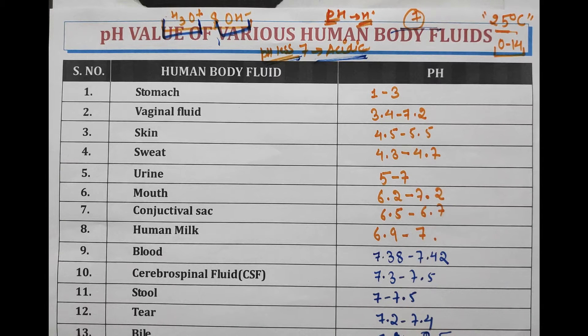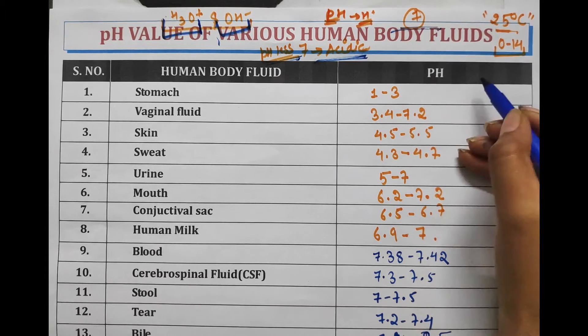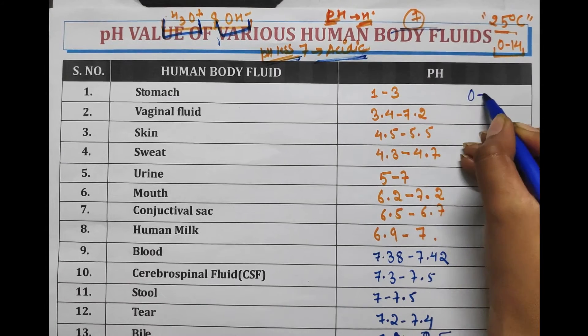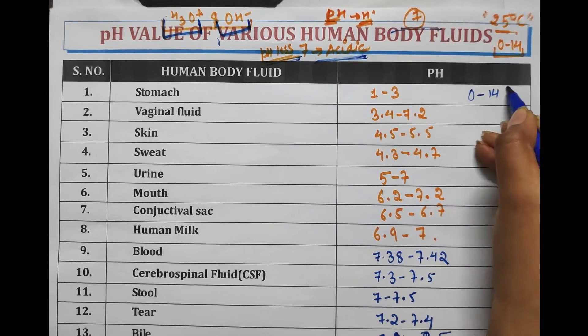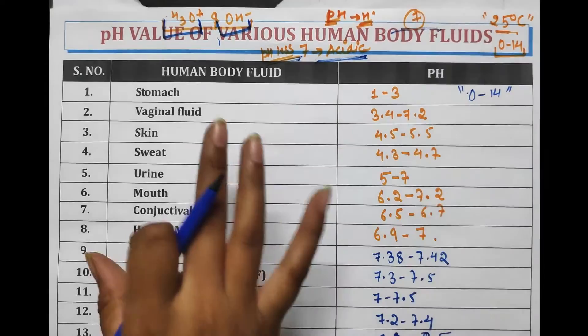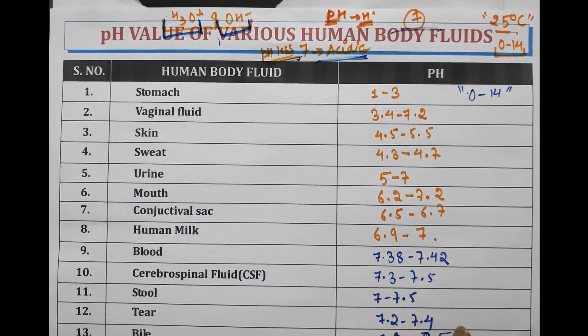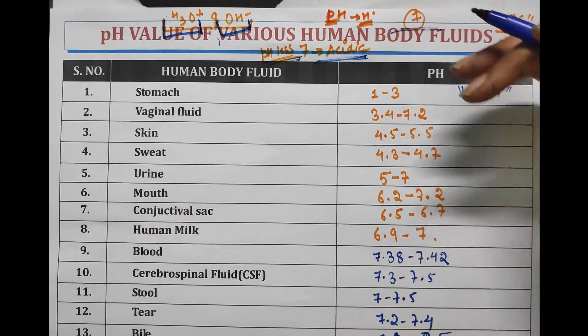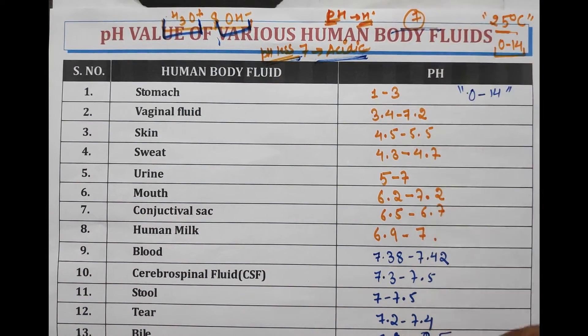The range of pH is from 0 to 14. Human body fluids have pH ranging from extreme acidic to basic levels.